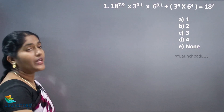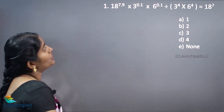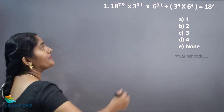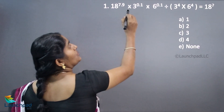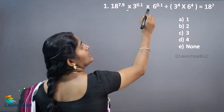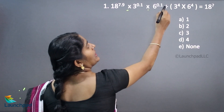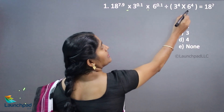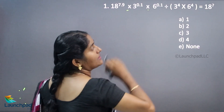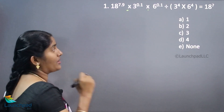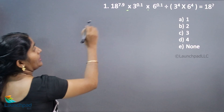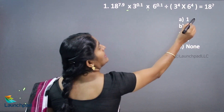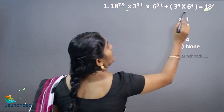Hello everyone. In this video we are going to see the next type of surds and indices rule. The question is 18 to the power of 7.9 into 3 to the power of 0.1 into 6 to the power of 0.1 divided by 3 to the power of 4 into 6 to the power of 4, which is equal to 18 to the power of what? Here we want to consider this as 18 power only.